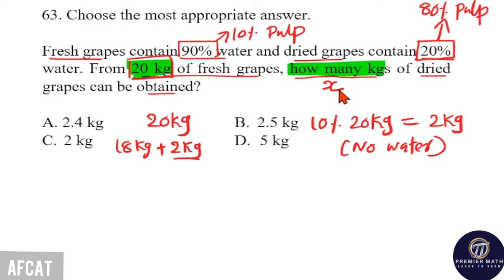That means, let us consider x kg as the dried grape obtained from this 20 kg. Then, this 80% pulp is equal to 2 kg. So, 80% of the required weight of dried grape is equal to 2 kg. That means, this x kg weight contains 80% pulp. This 80% pulp is equal to 2 kg.